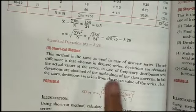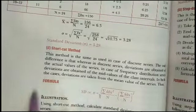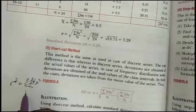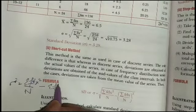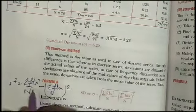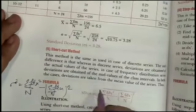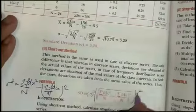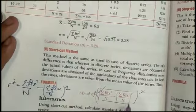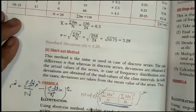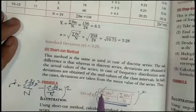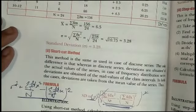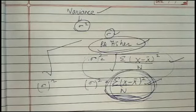Using the shortcut method: the standard deviation formula has a square root. For variance, we simply square both sides — the square root is cancelled by the square. So variance = (Σfd²/N) − (Σfd/N)² multiplied by h², without the square root. That is our formula for variance.